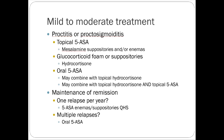For mild to moderate UC involving proctitis or proctosigmoiditis, topical 5-ASA drugs are first-line — mesalamine suppositories or enemas, or hydrocortisone foam and suppositories applied directly to the inflamed area. Oral 5-ASA drugs can be combined with topical formulations for a dual approach. For maintenance, one relapse per year warrants a 5-ASA enema or suppository nightly at bedtime; multiple relapses typically require long-term oral 5-ASA therapy.